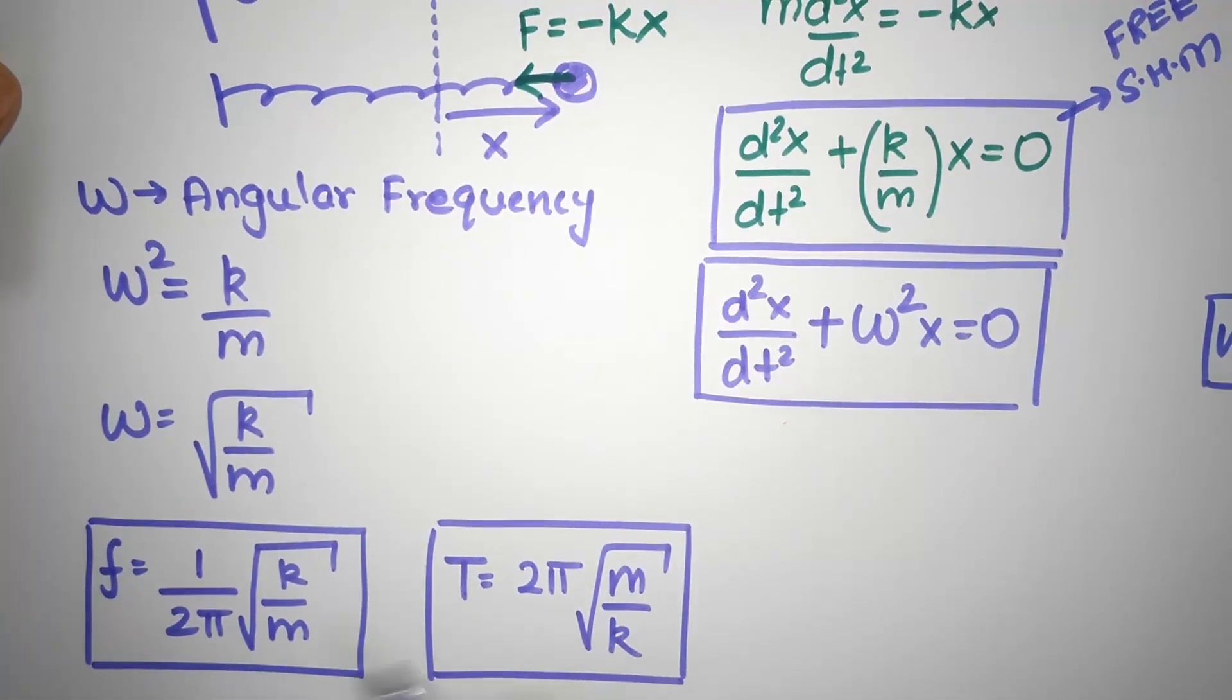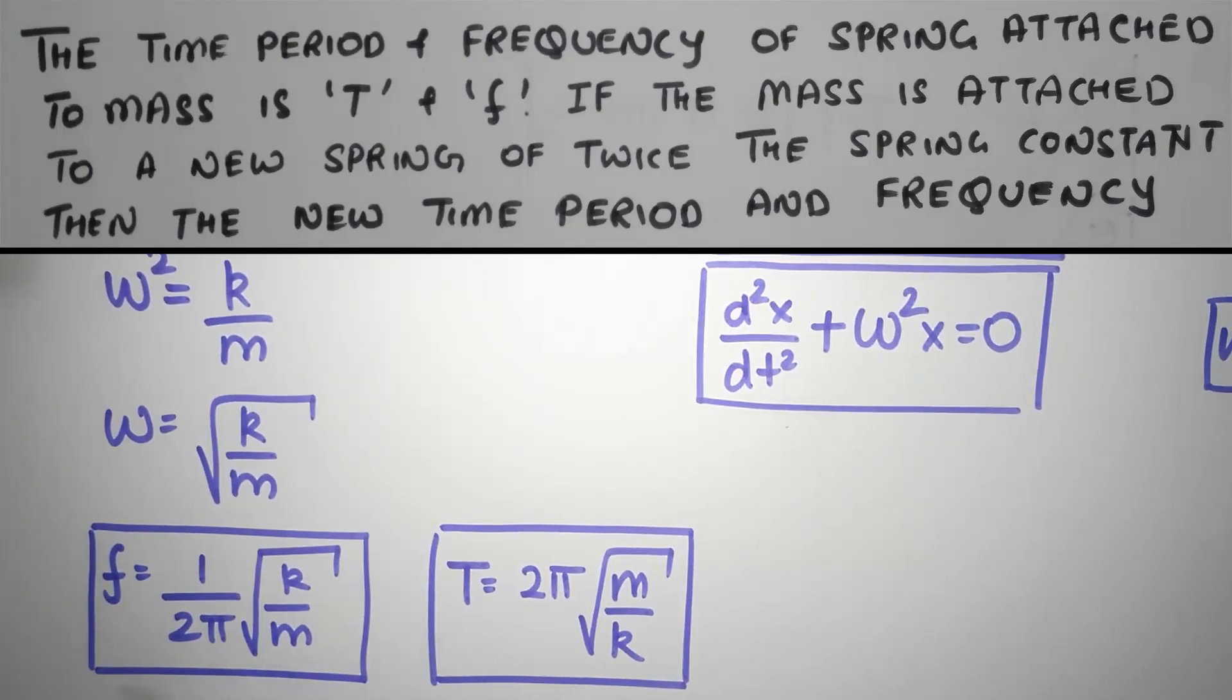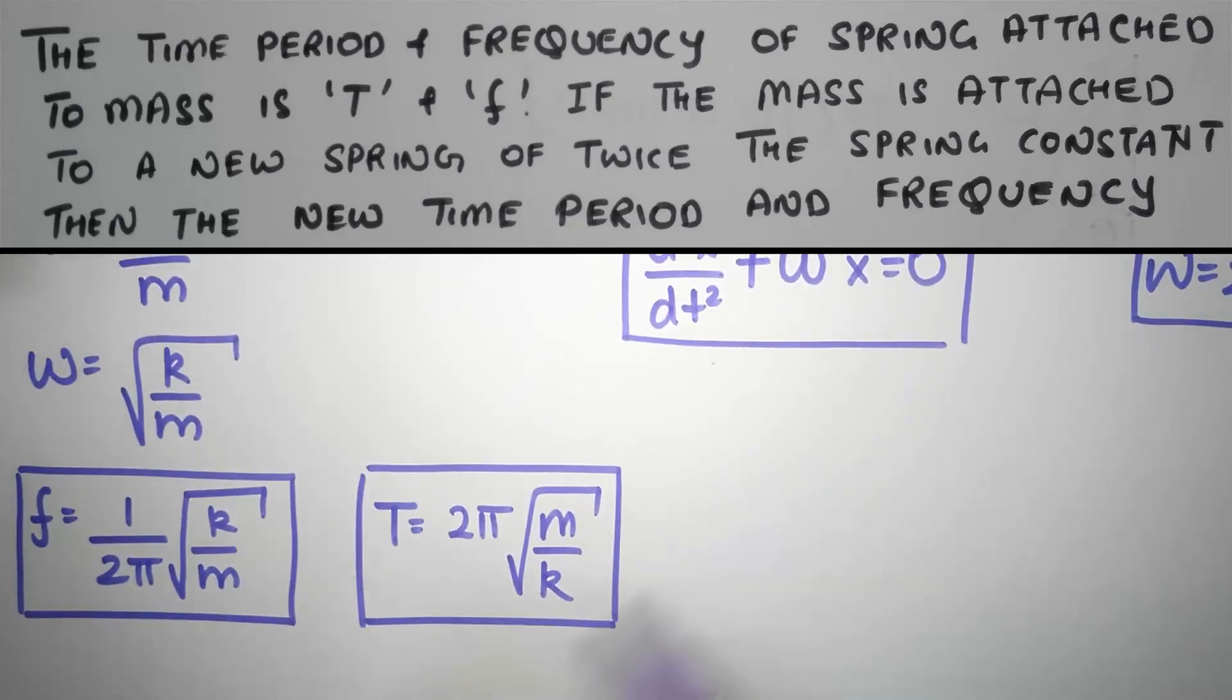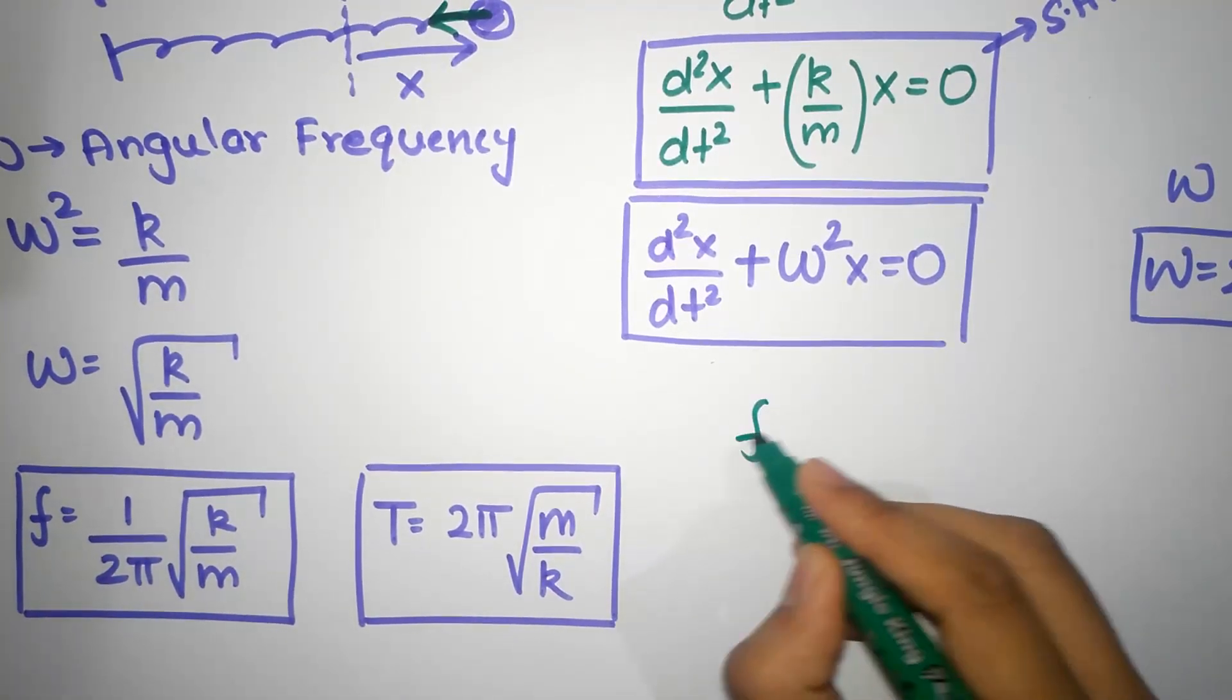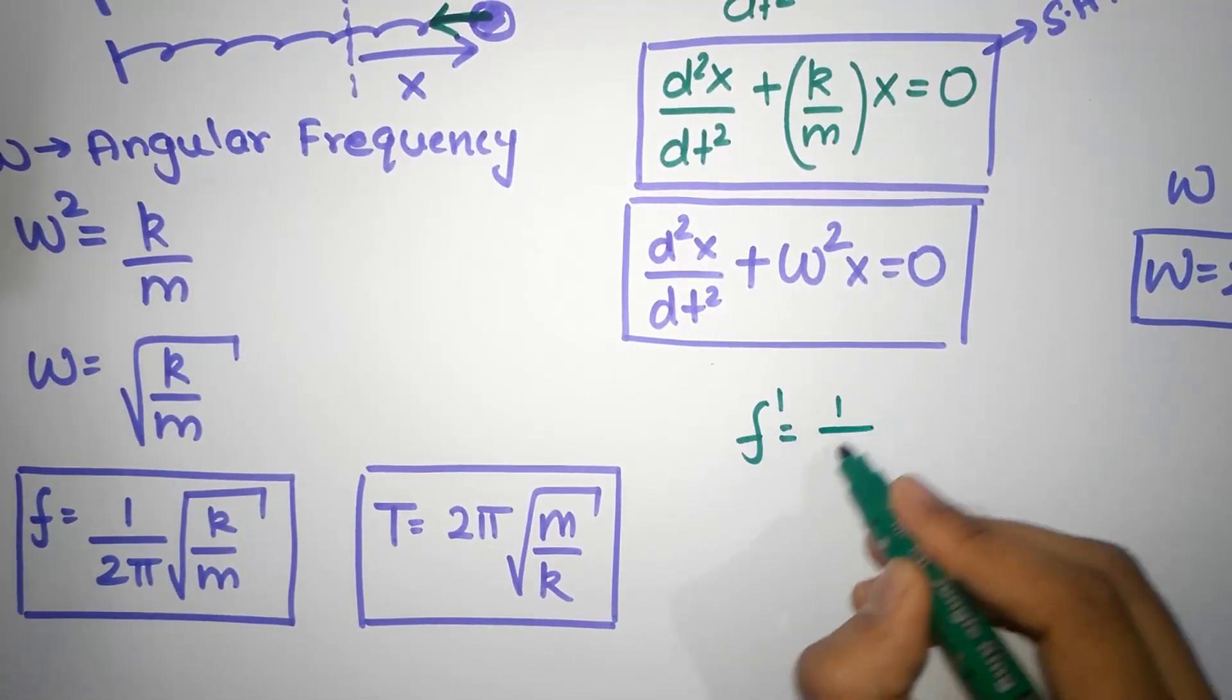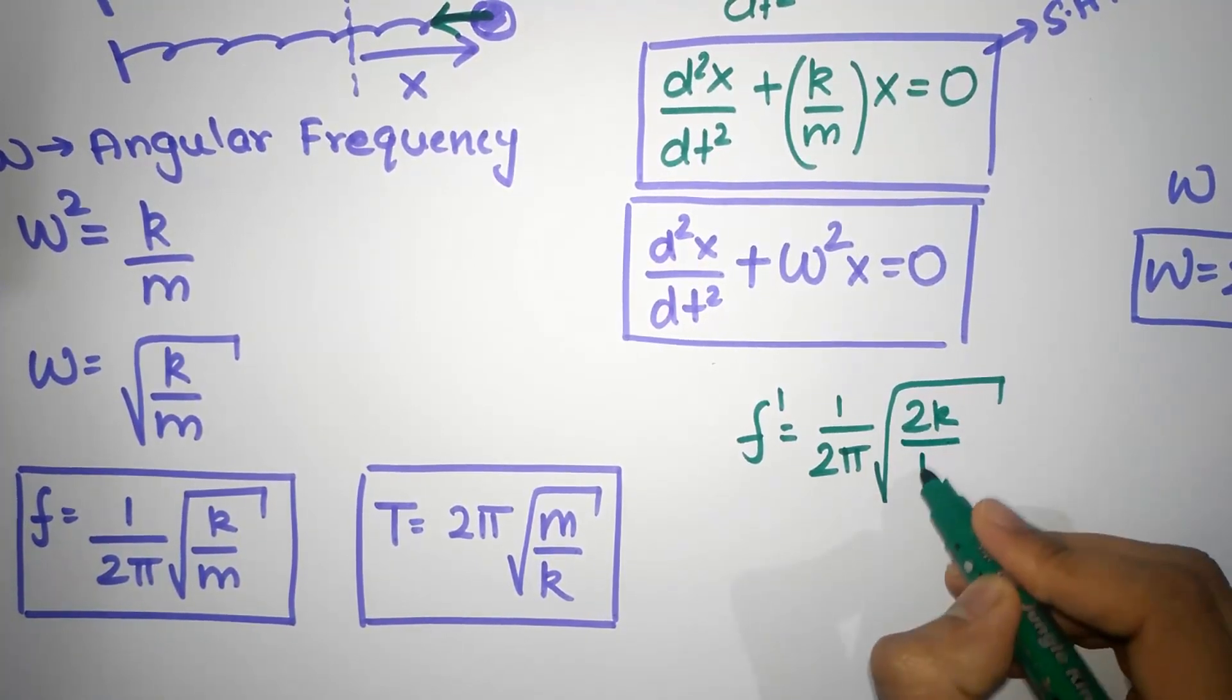We can now use this to try and answer our question. Our question was, what would happen if the mass was attached to a new spring with twice the spring constant? So, our new frequency would be 1 by 2 pi square root of 2k divided by m.